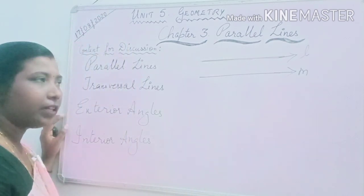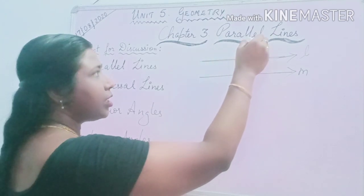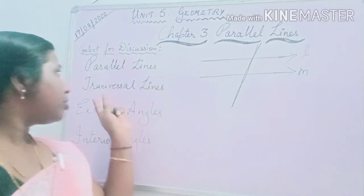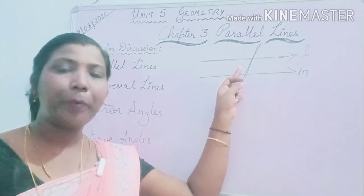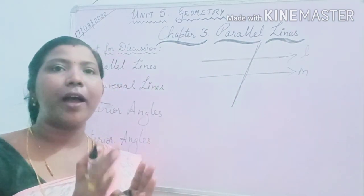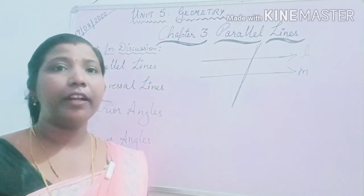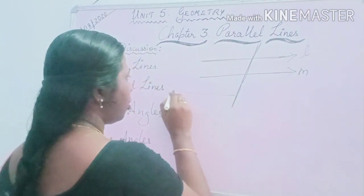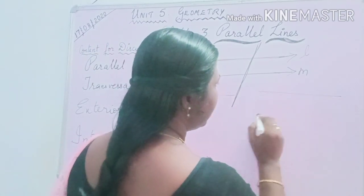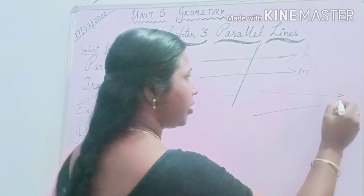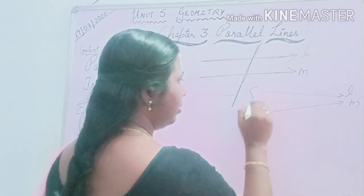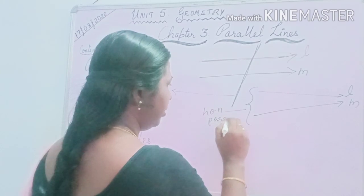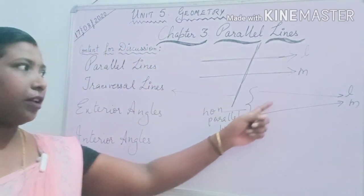Now if we talk about transversal lines — a transversal is the line which intersects two parallel lines, or it can also intersect non-parallel lines. Non-parallel lines means lines that can eventually intersect each other. So whether parallel or non-parallel, the line cutting through them is called the transversal.